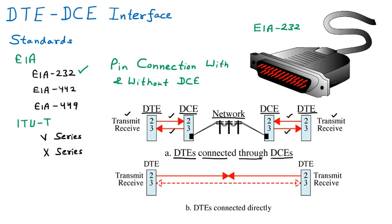Diagram B shows DTEs connected directly — without any modulator or demodulator. In this case, two DTEs can be connected together and they can transmit and receive data in both directions. DCE is required in most places, but if modulation and demodulation are not needed, DCE is not required. In summary, DTE devices transmit, use, or receive data in digital form — like printers and fax machines — while DCEs handle modulation and demodulation, like modems.